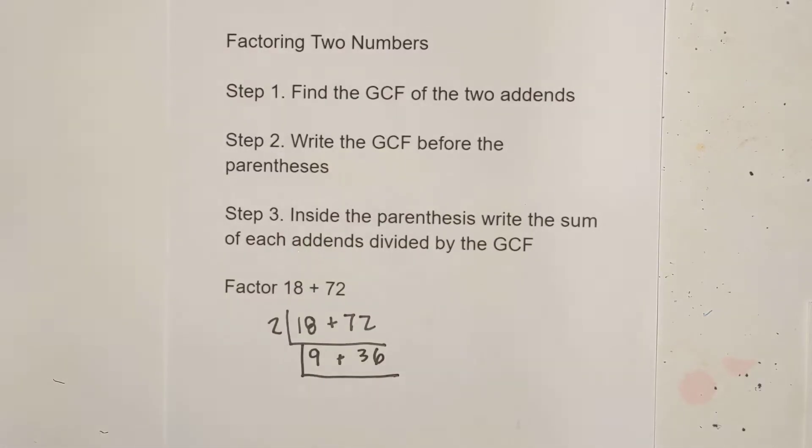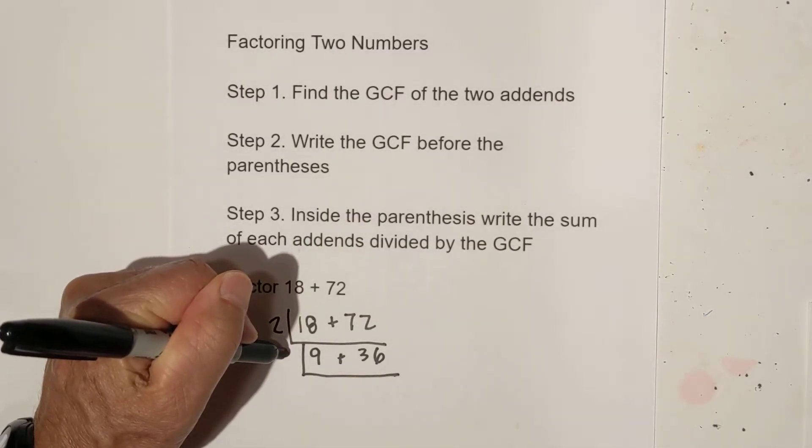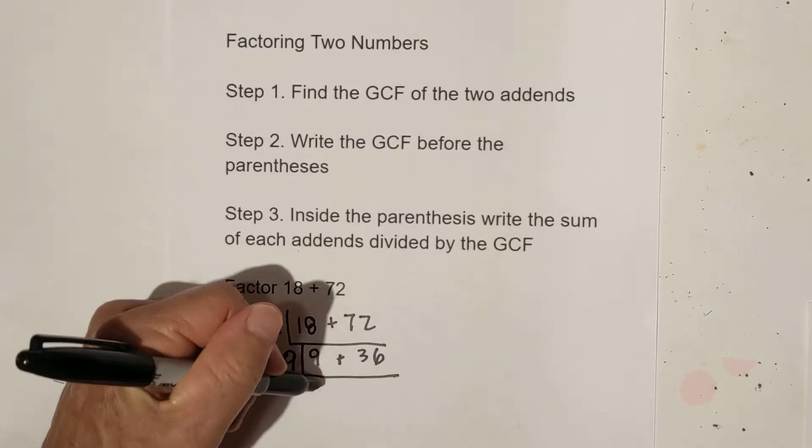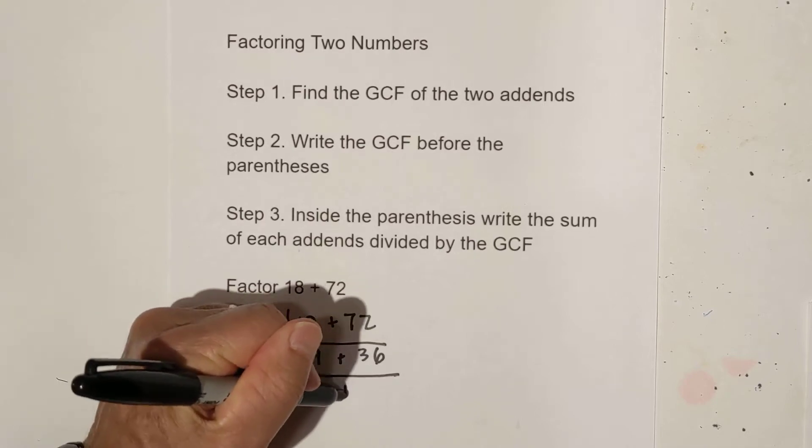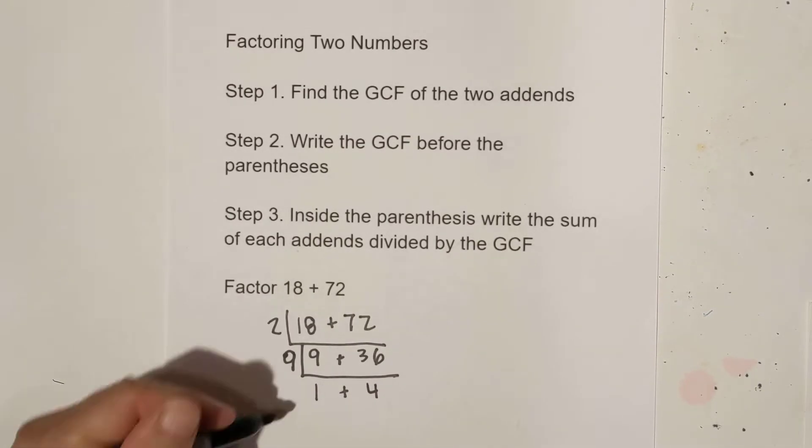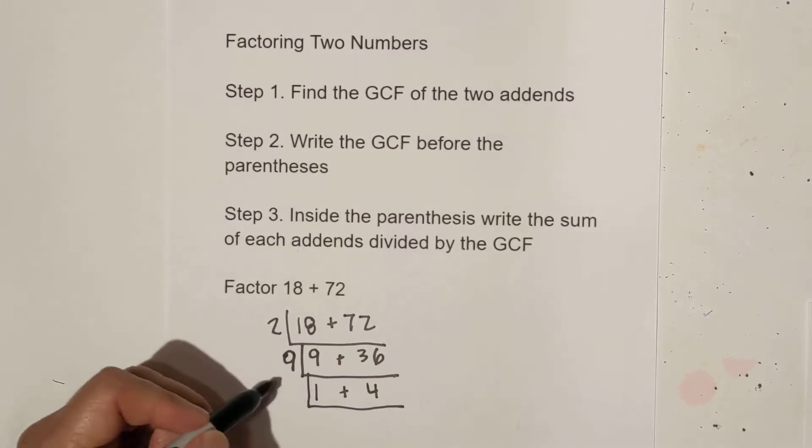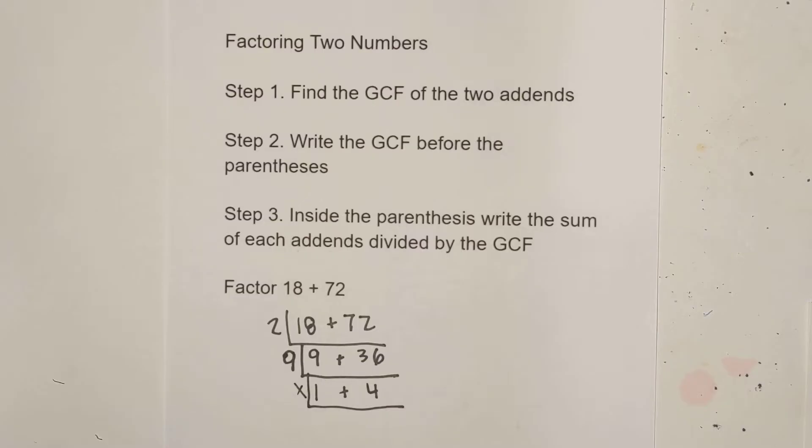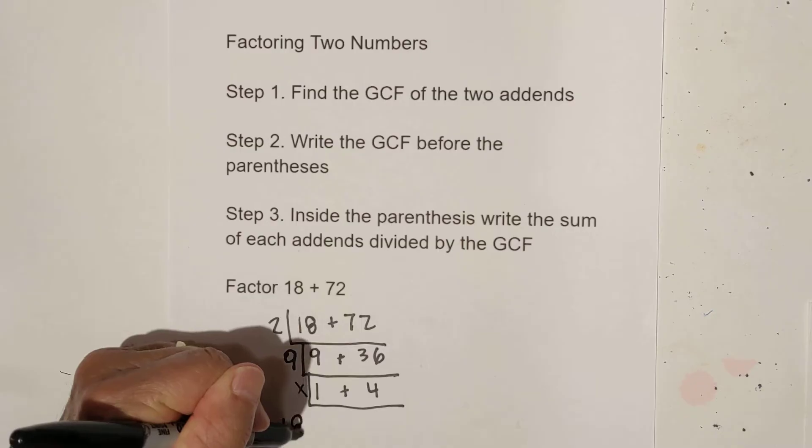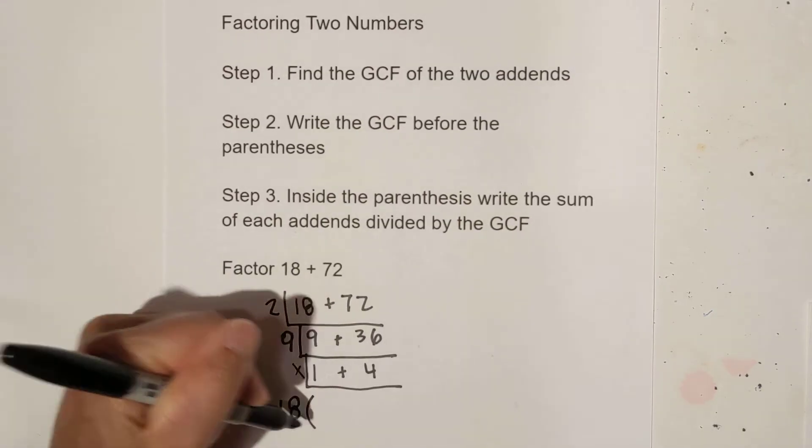We'll draw another sled and then three goes into nine and thirty-six. So actually nine goes into nine and thirty-six. So we have one plus four. And so now we're down to this is a prime number so we can put an X there. So to find the greatest common factor we multiply nine times two and that is 18.